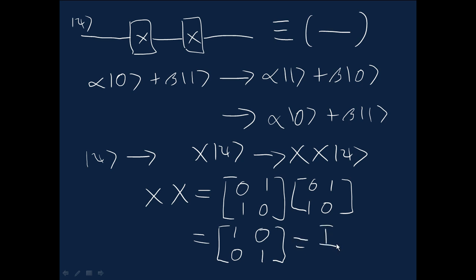So that's the identity matrix, the 2 by 2 identity matrix. And as a result, whatever the input is, gets taken to the identity times the input, which is just the same as the original input. So this is a more algebraic way of seeing that the effect of two NOT gates in a row is just the identity.